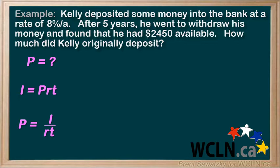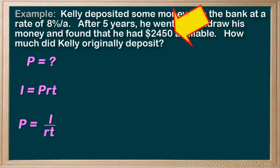But we don't actually know what the I, or the interest, is in this situation. The $2,450 includes the interest, but it also includes the principal. And we don't know how much of the $2,450 is interest and how much of it is principal. So we're kind of stuck here.